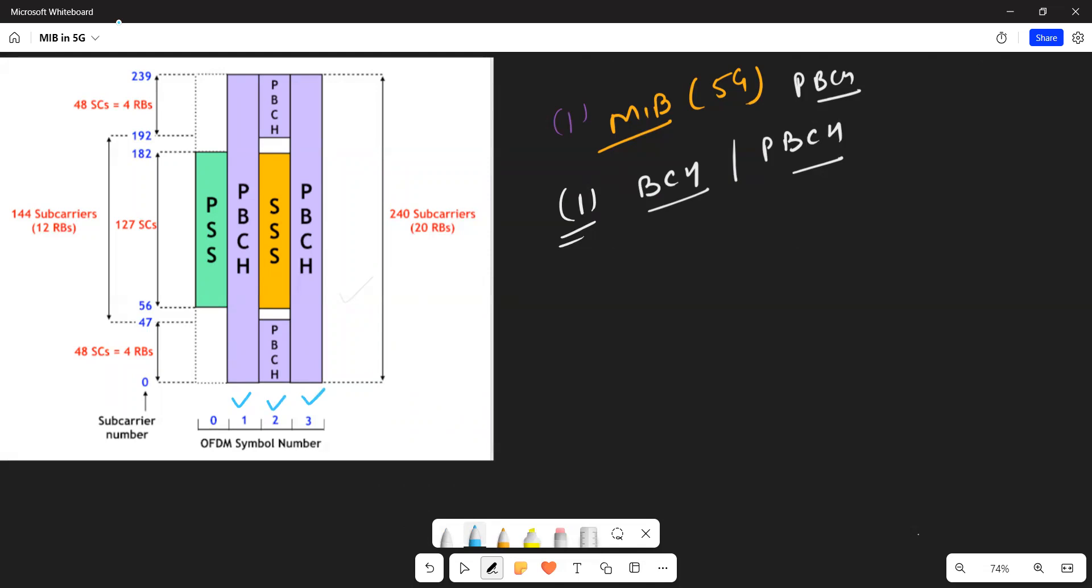The second point is MIB uses QPSK modulation scheme in both the cases, in LTE as well as in NR. Both the points first and two are same here.